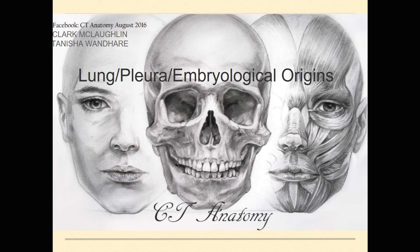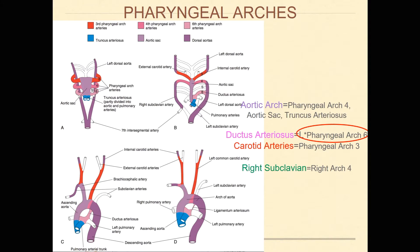Hello everyone, and welcome to CT Anatomy. My name is Clark, and I'll be taking you through lung, pleura, and heart embryological origins today. One important thing is to understand derivatives of the pharyngeal arches or aortic arches, and how these embryological origins play a part in making different structures important for clinical aspects, such as in newborns.